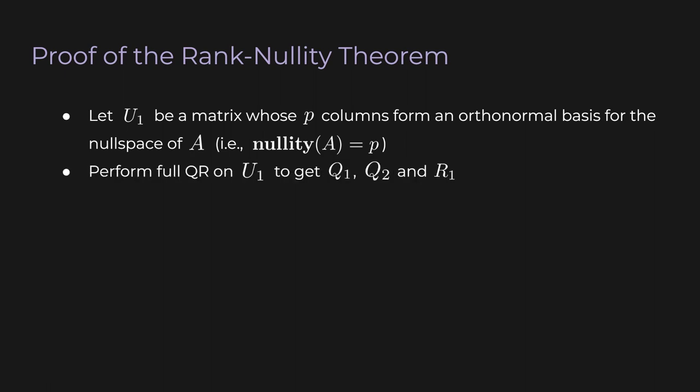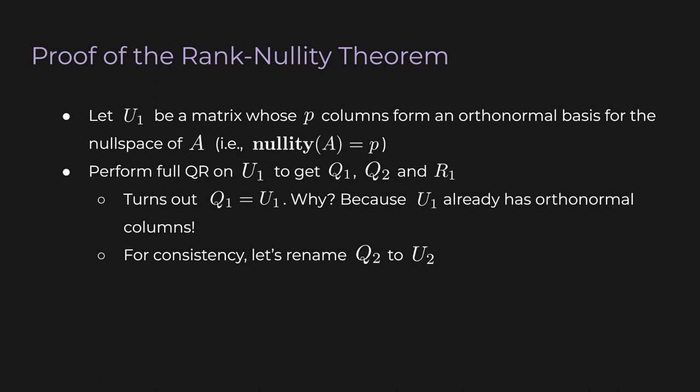Now let's perform full QR on U1 to get Q1, Q2, and R1. Again, these are just the matrices that we get out of full QR. But let's think for a minute. It turns out that Q1 is actually equal to U1. Why? Because U1 already has orthonormal columns. Also for consistency, let's just rename Q2 to U2. We don't need to do this, but it'll make the rest easier to follow. Now note that U2 has N minus P columns. Hmm, okay, this is a big hint. Remember that P is the nullity of A. So all that we're missing now is the rank of A.